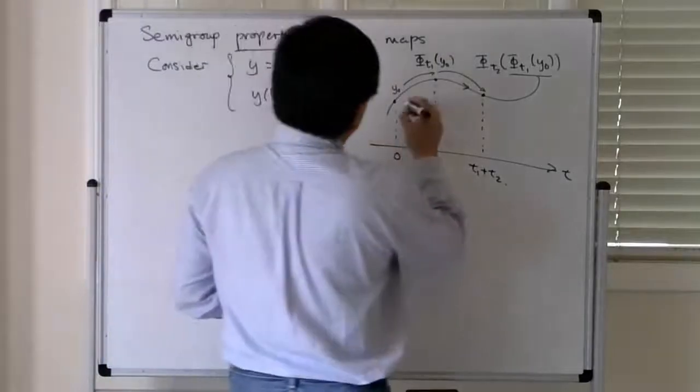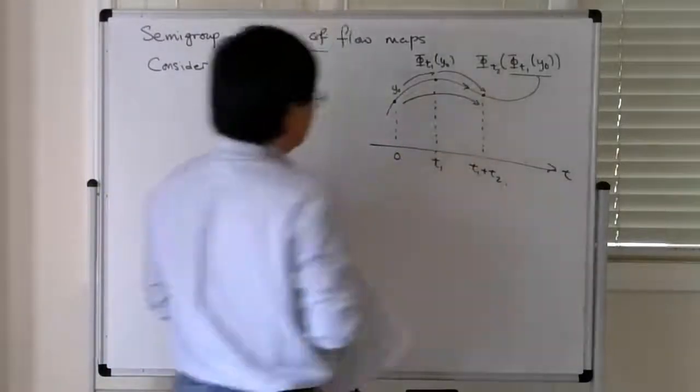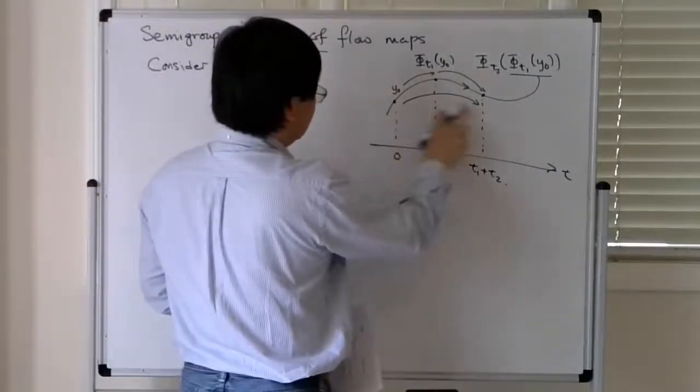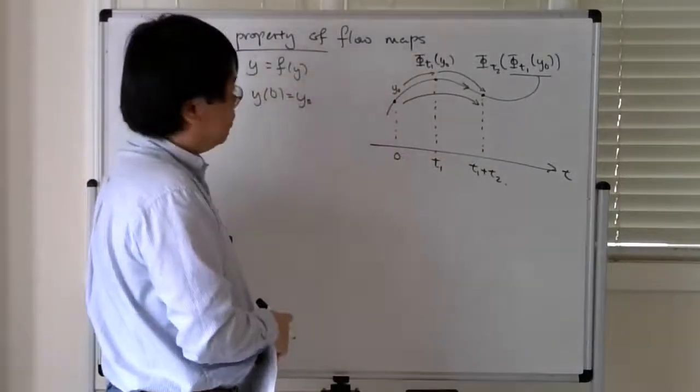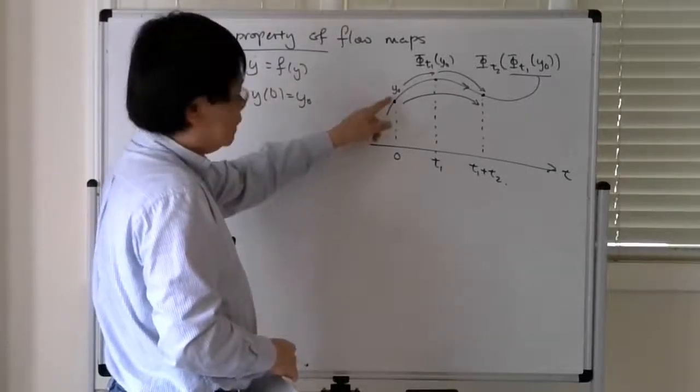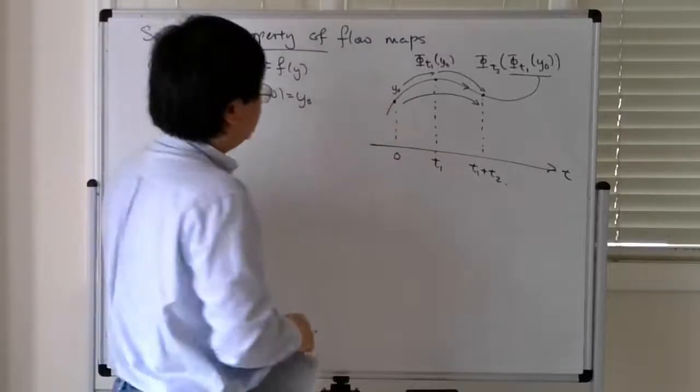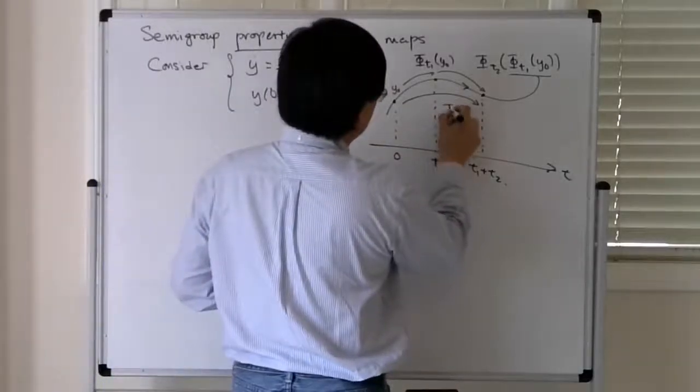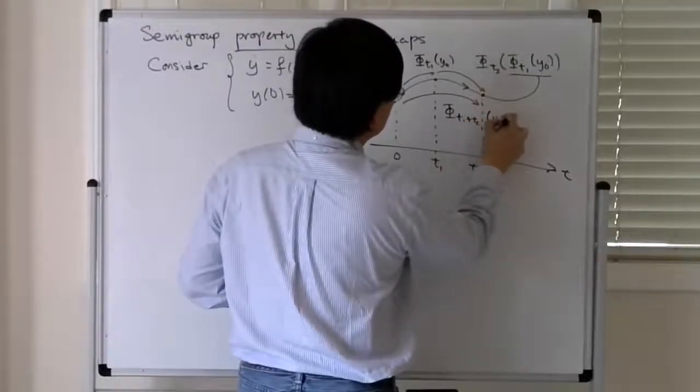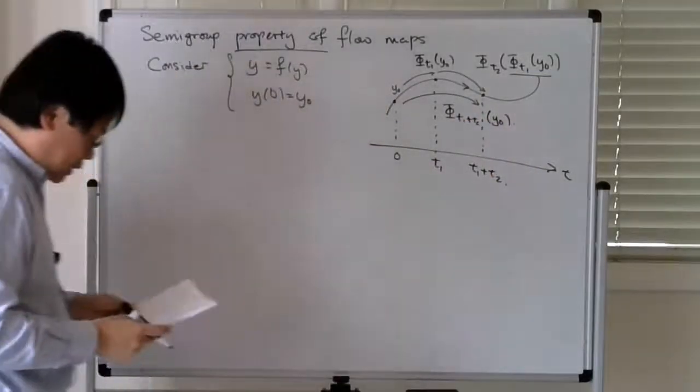What has to happen is that this should be the same as what you would get if you were to take a single flow map of length t1 plus t2 applied to the initial data y0. So this is the flow map for t1 plus t2 applied to y0, so those two things should agree.